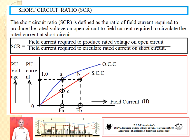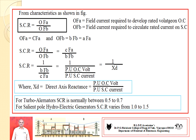OFB is the field current required to develop the rated current under short circuit conditions, meaning all three terminals of the alternator are shorted. So OFA is the field current to develop rated voltage on open circuit, and OFB is the field current to develop rated current at short circuit. Therefore, SCR = OFA / OFB.